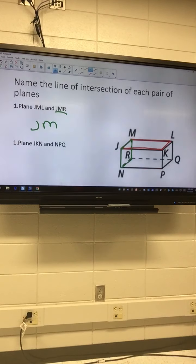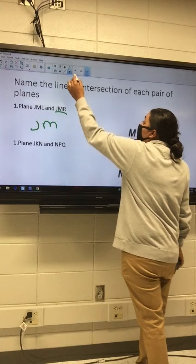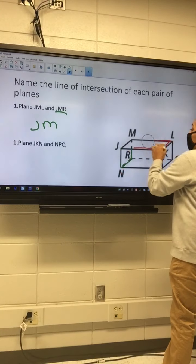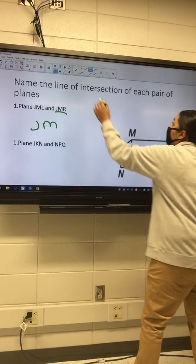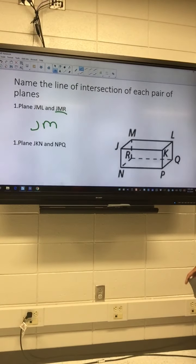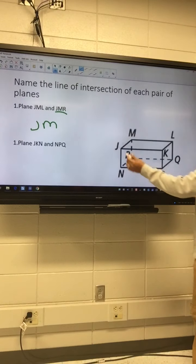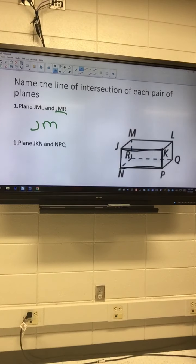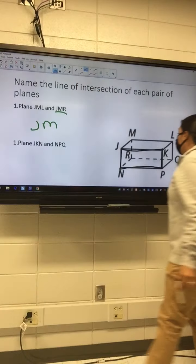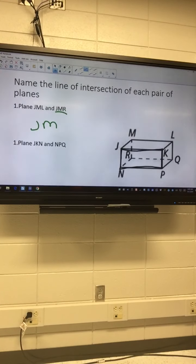Okay? Look at the next one. JKN. What plane is that? So, start at JK, and we've got an N. So, it's the front. Okay? Find the other one. NPQ. Which one is that?